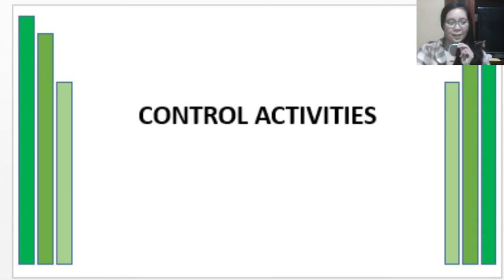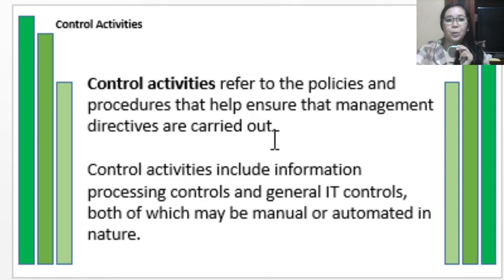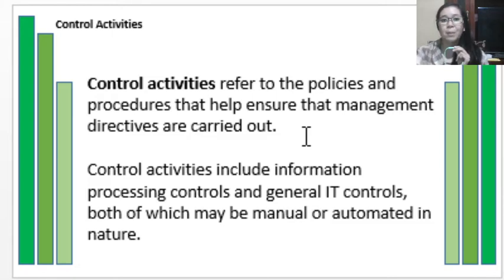In this video lecture, we are still discussing the elements of the system of internal control. This is the last element: control activities. Control activities refer to the policies and procedures that help ensure that management directives are carried out — these are the procedures that are actually being implemented.